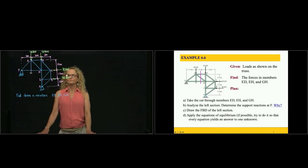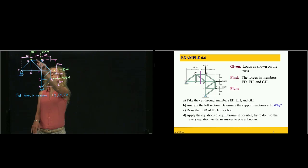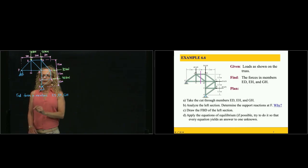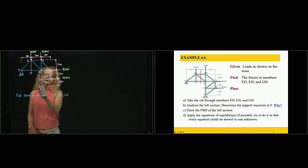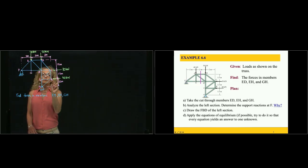This is problem 6.6. Here we have a truss with several members. We have four external forces, a roller at F and a pin at A. A roller creates only one reaction because it only restricts displacement in the Y direction. A pin at A restricts two displacements in X and Y.